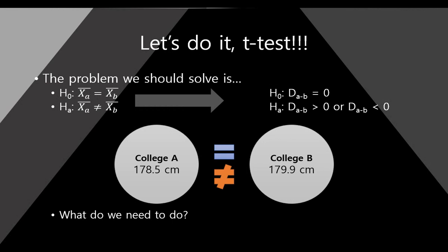Today we will go on the t-test — real t-test. The problem we should solve today is like this. The statistical hypothesis is: first, the null hypothesis is x-a bar equals x-b bar. It means that these two college male students' heights are the same. The alternative hypothesis is that x-a bar and x-b bar are not equal, meaning these two college students' heights are different. This type of statistical hypothesis could be changed like this.